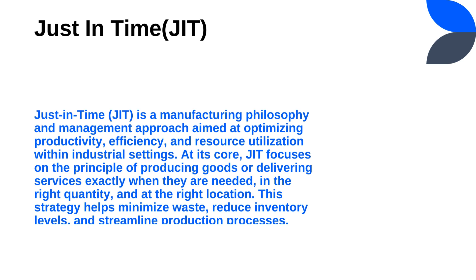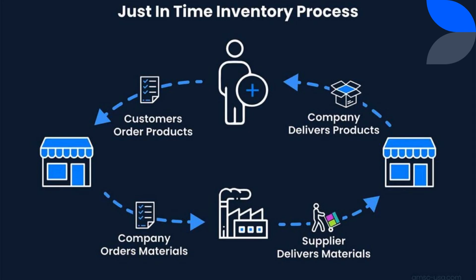Instead of maintaining large inventories of raw materials, work in progress, or finished goods, JIT advocates for a pull-based system where materials are ordered and produced only as needed to fulfill customer demand. Only the amount actually required for customers is ordered — no excess raw materials. Waste reduction: JIT focuses on eliminating waste in all forms, including overproduction, excess inventory, defects, waiting time, unnecessary motion, and underutilized talent, improving efficiency and reducing cost.